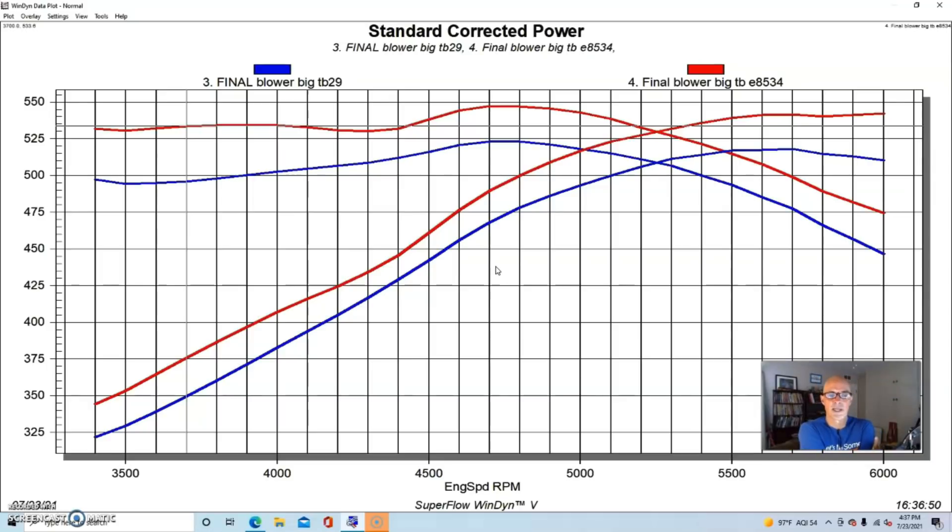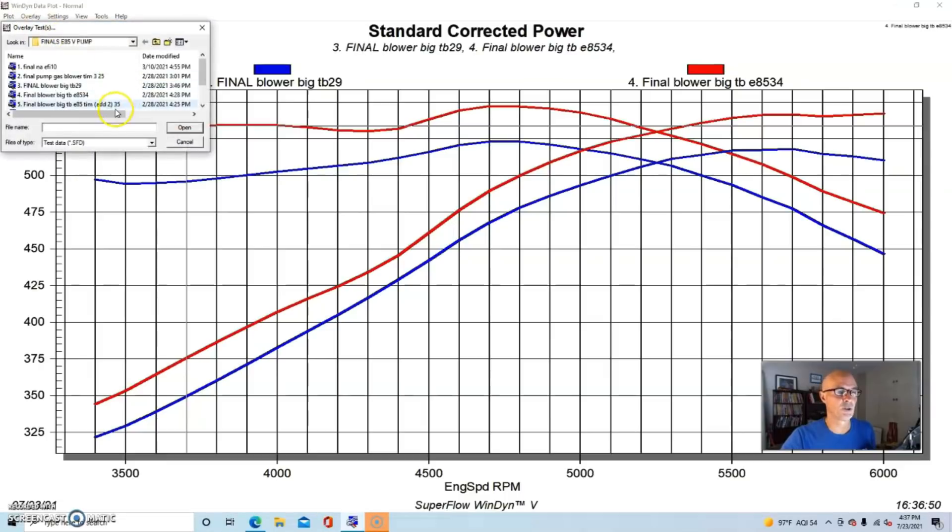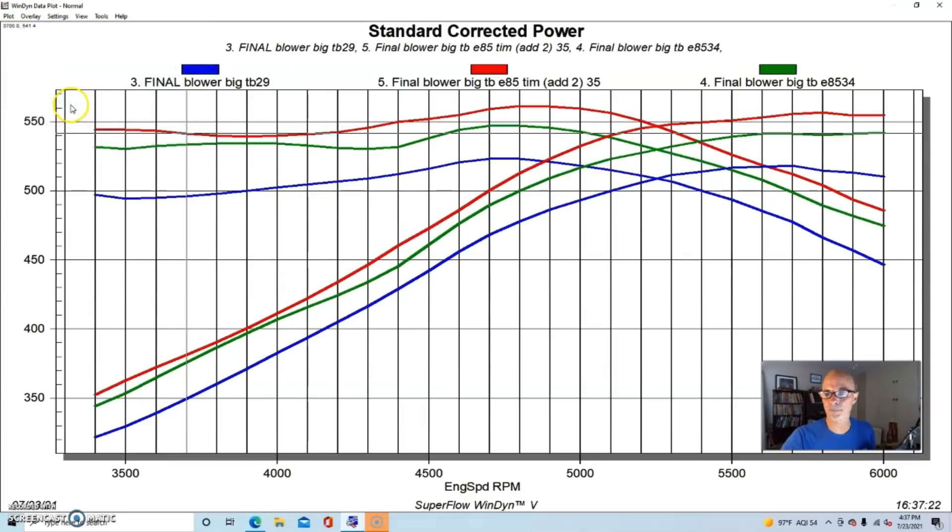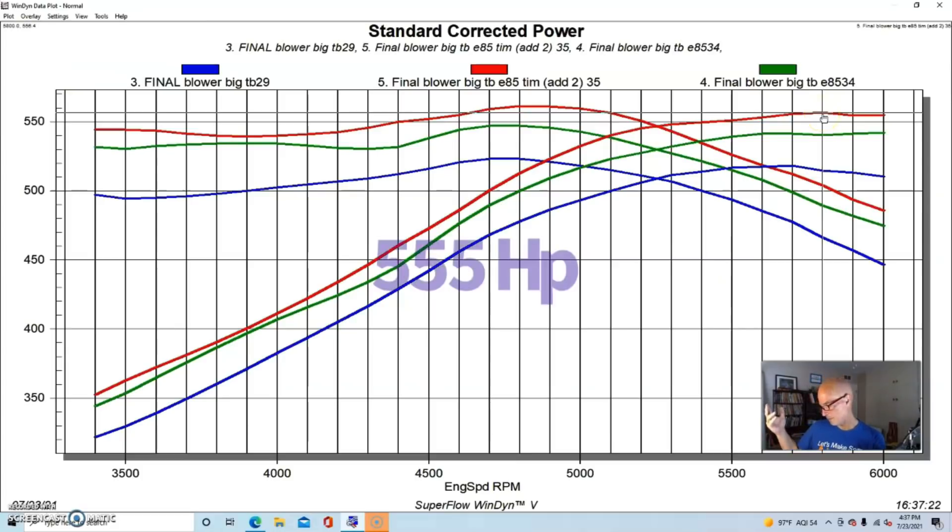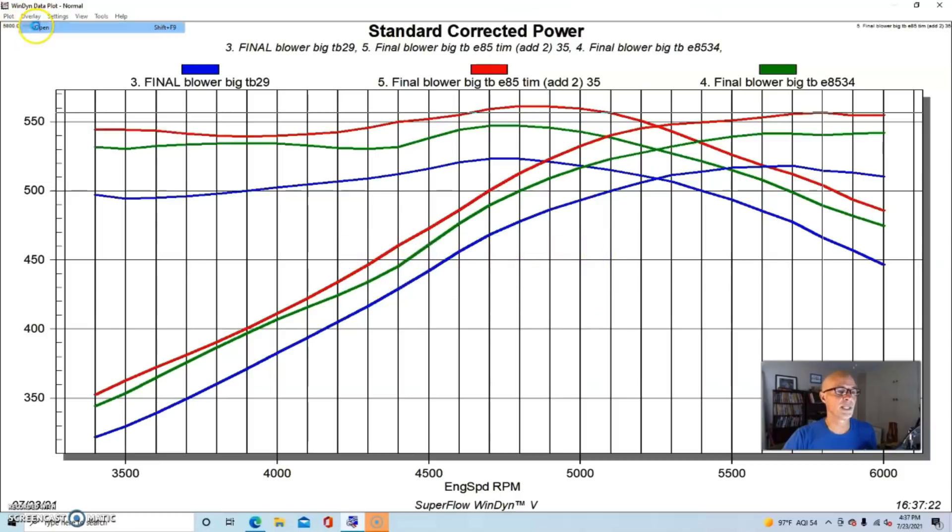One thing we did on this one, because we were still running fairly mild pump gas state of tune with pump gas timing levels, we then added more timing to this thing. We added two degrees of timing and you could see peak power jumped up to 555 horsepower and 561 foot-pounds of torque. Then we added another three degrees to get up to about 23 degrees total, and that's where we made the most power.